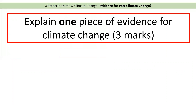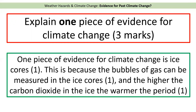Now have a go at this exam question: explain one piece of evidence for climate change — it's worth three marks. For a three-mark explain question, follow the Point, Explain, Develop structure (P-E-D). Pause the video, have a go, then restart. Here's one example using ice cores. Point: one piece of evidence for climate change is ice cores. Explain: this is because the bubbles of gas can be measured in the ice cores. Develop: the higher the carbon dioxide in the ice, the warmer the period. To recap: four pieces of evidence for past climate change — ice cores, tree rings, historical sources, and pollen analysis.